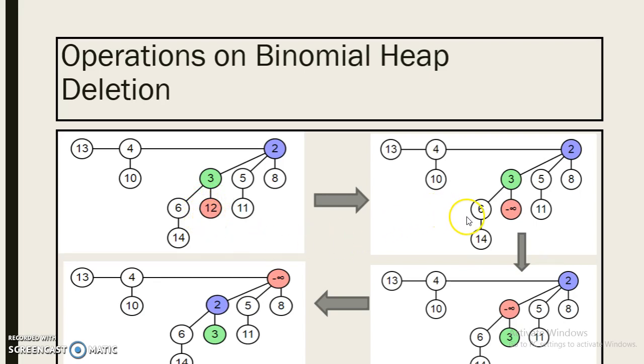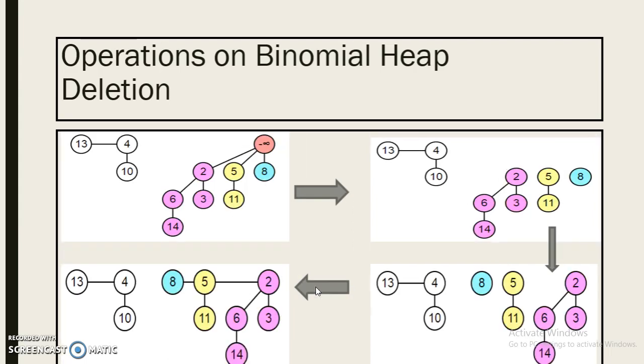Here let's say we want to remove this node with the value 12, so we will assign minus infinity value to that node. Now minus infinity is smaller than 3, so they will swap. Now we remove that minus infinity node.